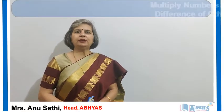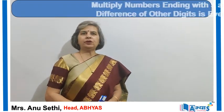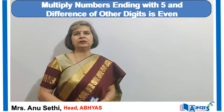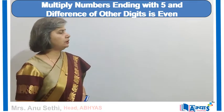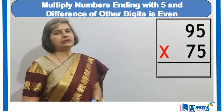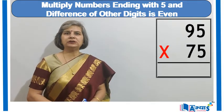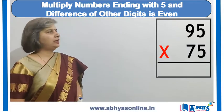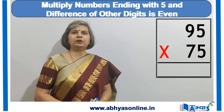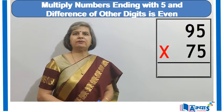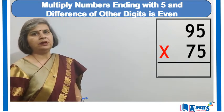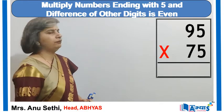Let us discuss a technique of multiplying two numbers ending with 5. When both numbers end with 5, we look at the difference of the other digits — it can be even or odd. This is a concept of Vedic Maths, a way of performing mental calculations faster. In competitive exams where time is short, these techniques help a lot. We will now discuss the method where the difference of the other digits is even.